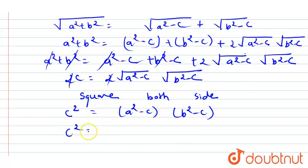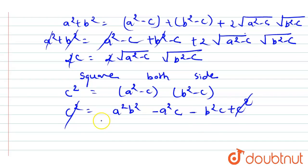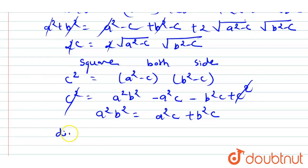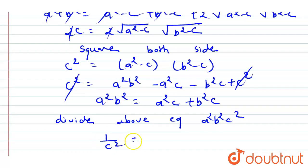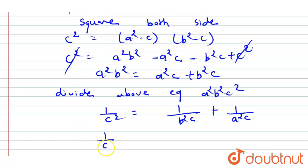On further solving, c² = a²b² - a²c - b²c + c². The c² terms cancel out, giving a²b² = a²c + b²c.